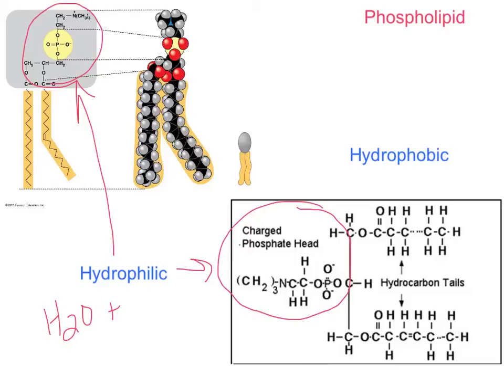Water is made up of polar covalent bonds, and because the bonds holding oxygen and hydrogen together are polar covalent, that makes the hydrogen have a little positive charge and the oxygen a little negative charge. So the phosphate head, which has this negative charge on it, is hydrophilic.